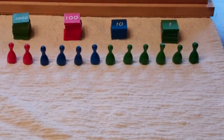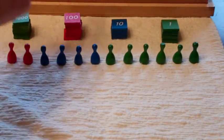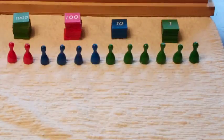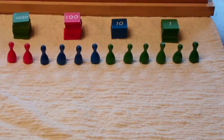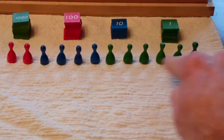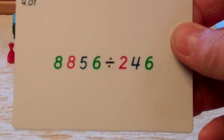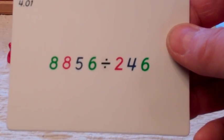I've built our dividend, which is 8 thousands, 8 hundreds, 5 tens, and 6 units. And we're going to divide that up, and our divisor is 2 hundreds, 4 tens, and 6 units. So remember, we're doing 8,856 divided by 246.